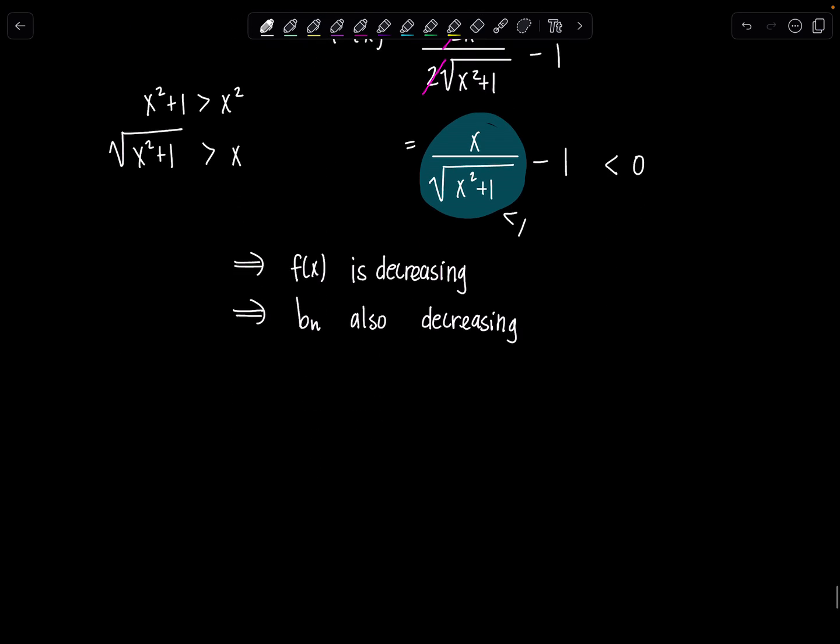Now the second thing I need to check is what is the limit as n approaches infinity of b sub n, which is the square root of n squared plus 1 minus n. If you're looking just the way it's written right now, as n approaches infinity, square root of n squared plus 1 approaches infinity, so does n.